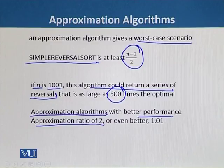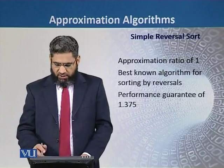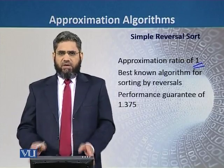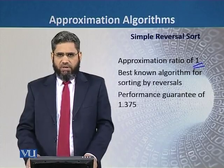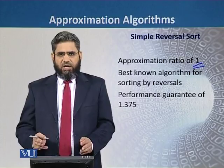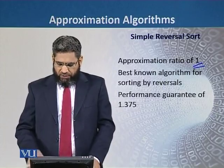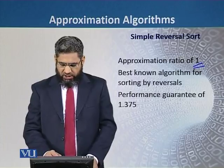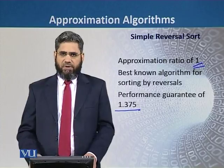Our goal is that approximation algorithms will have better performance, with approximation ratio of 2, or even better, 1.01. Of course, an algorithm with an approximation ratio of 1 would be the best possible solution that can be found with these approximation algorithms. But unfortunately, these types of algorithms cannot be designed or produced up till now, and there is no possibility that these types of algorithms can be produced in the future. The best algorithm for sorting by reversals has the best performance guarantee of 1.375. More than 1.375 approximation ratio has not been achieved so far.